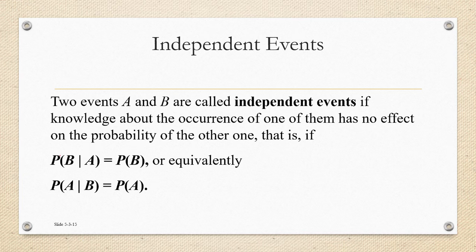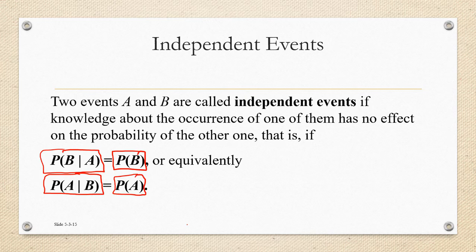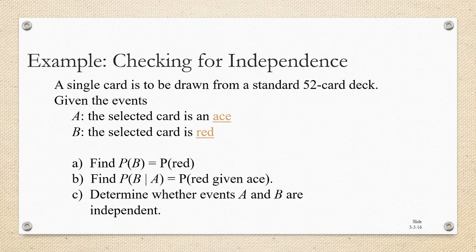In general, we can say two events A and B are called independent events if knowledge about the occurrence of one of them has no effect on the probability of the other one. The way we represent this using probability notation would be with the symbols for conditional probability: the probability of B given A must equal the probability of B, and equivalently the probability of A given B should equal the probability of A. We're going to use this idea to check to see if two events are independent.